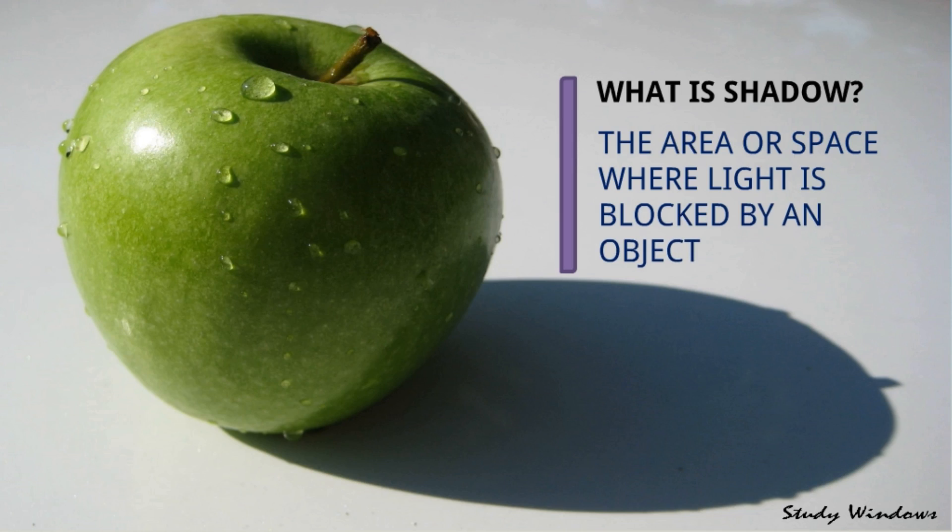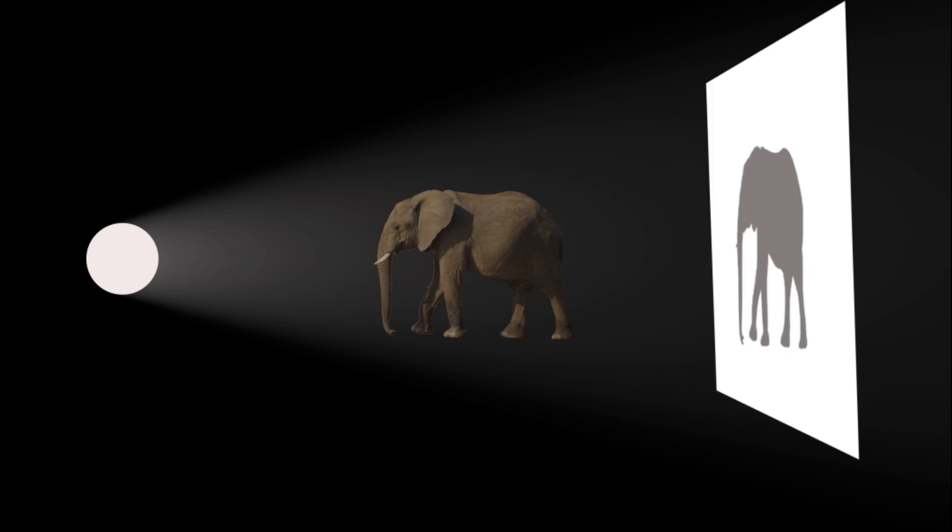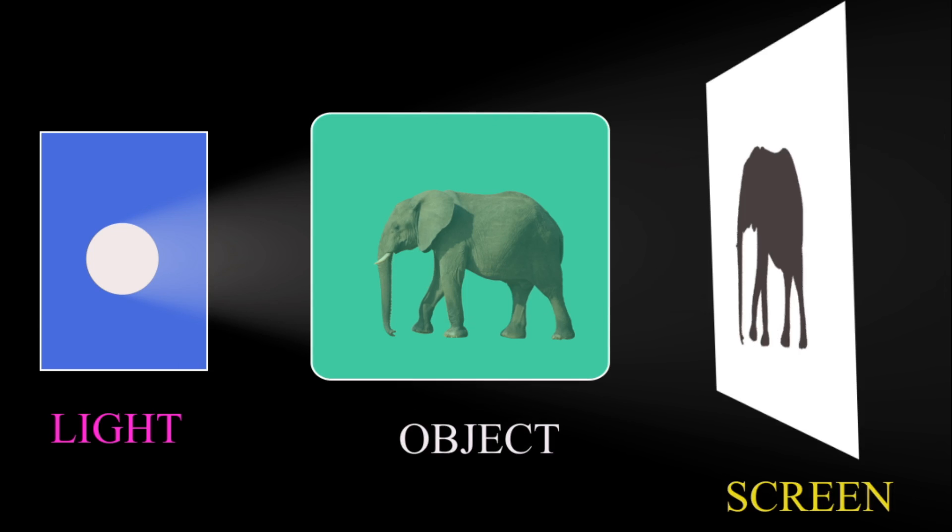Are you able to see anything here? No. If there is a light then you were able to see there is an elephant, but are you able to see the shadow here? No. But if we put a screen then we can see the shadow here. So to form a shadow there are three things required: light, object, and screen.